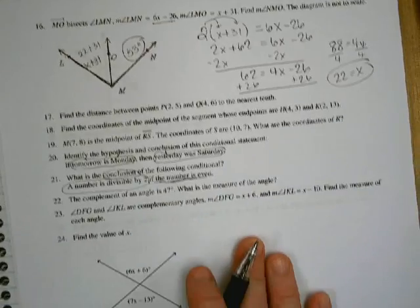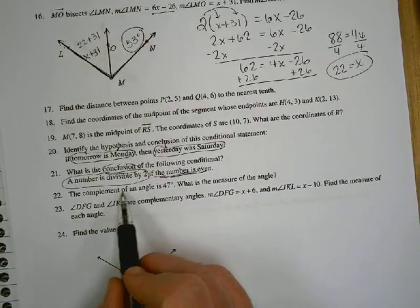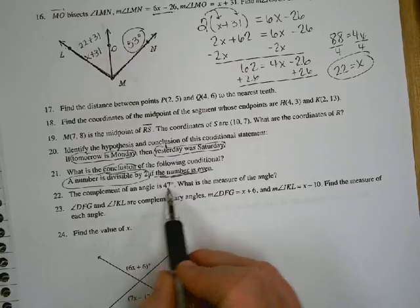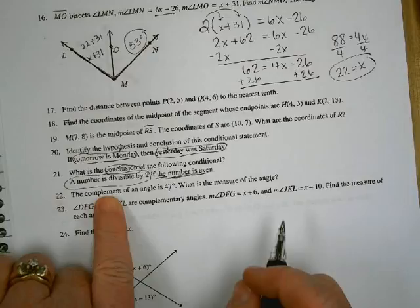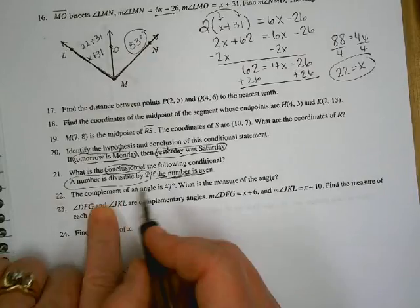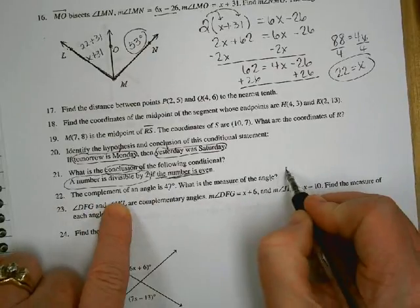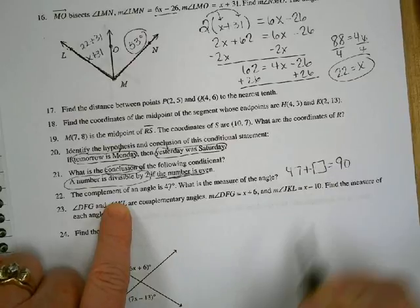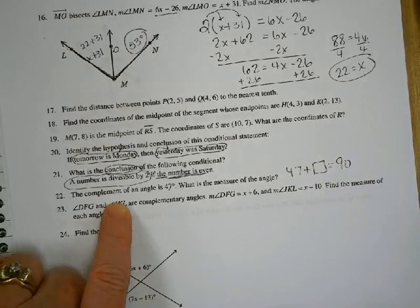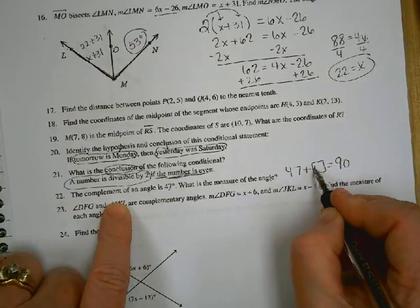22 says the complement of an angle is 47. What's the measure of the angle? What does a complement mean? Equals 90 degrees. So 47 plus something equals 90. So what's that missing number? 43.